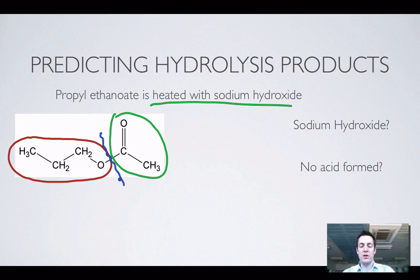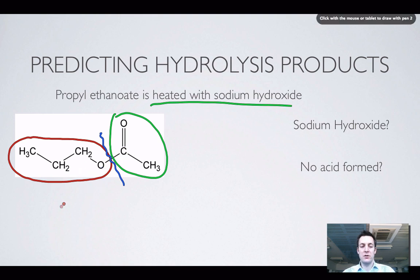Remember that this bond here, which I've just broken with this blue line, was the bond that we formed when we made an ester from the alcohol and the carboxylic acid. Also remember that the carboxylic acid lost OH in the process and the alcohol lost H — that's where our water came from.